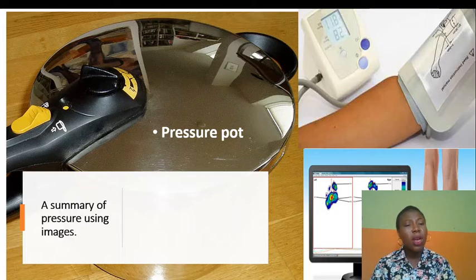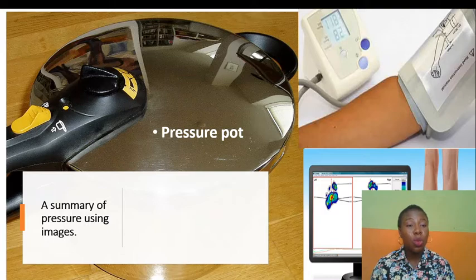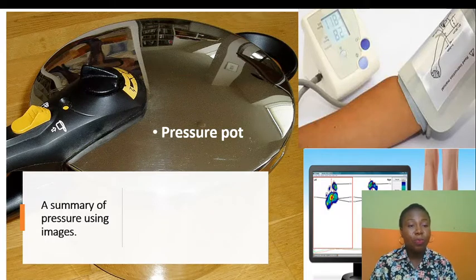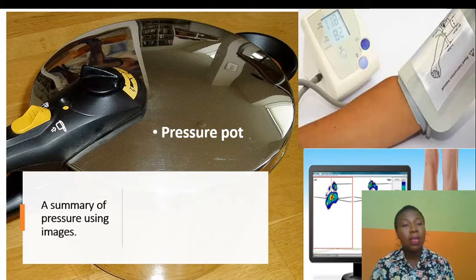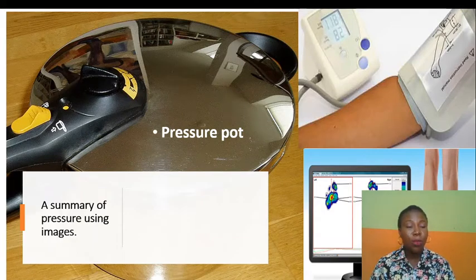We also have the pressure measuring machine, which we use for blood pressure. Once it is placed over the arm, the digital machine starts to read and you can know the level of your blood pressure.